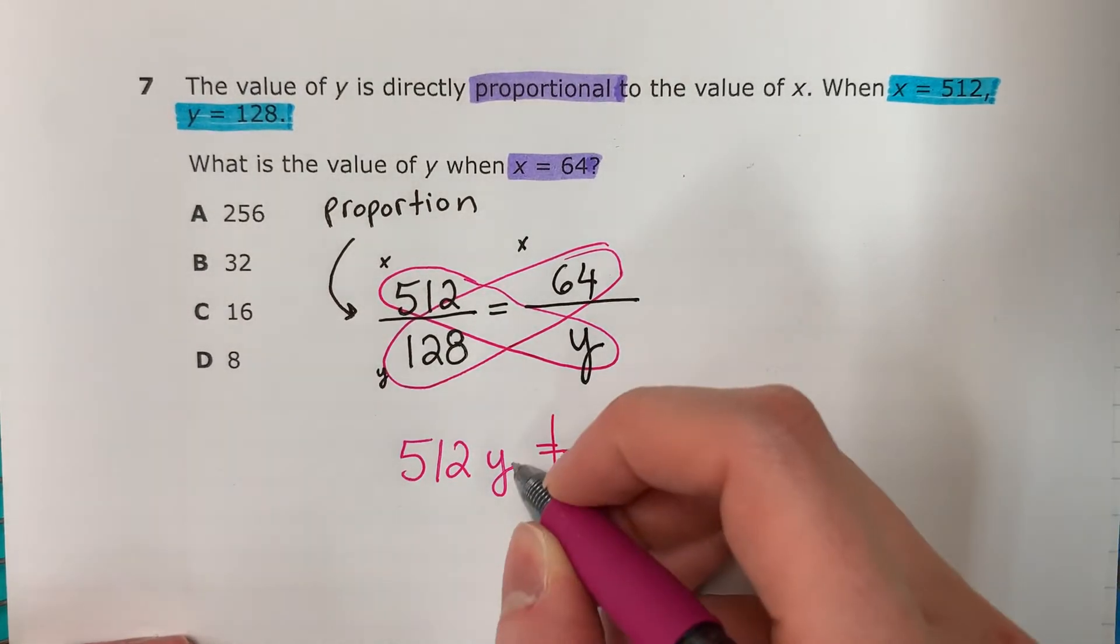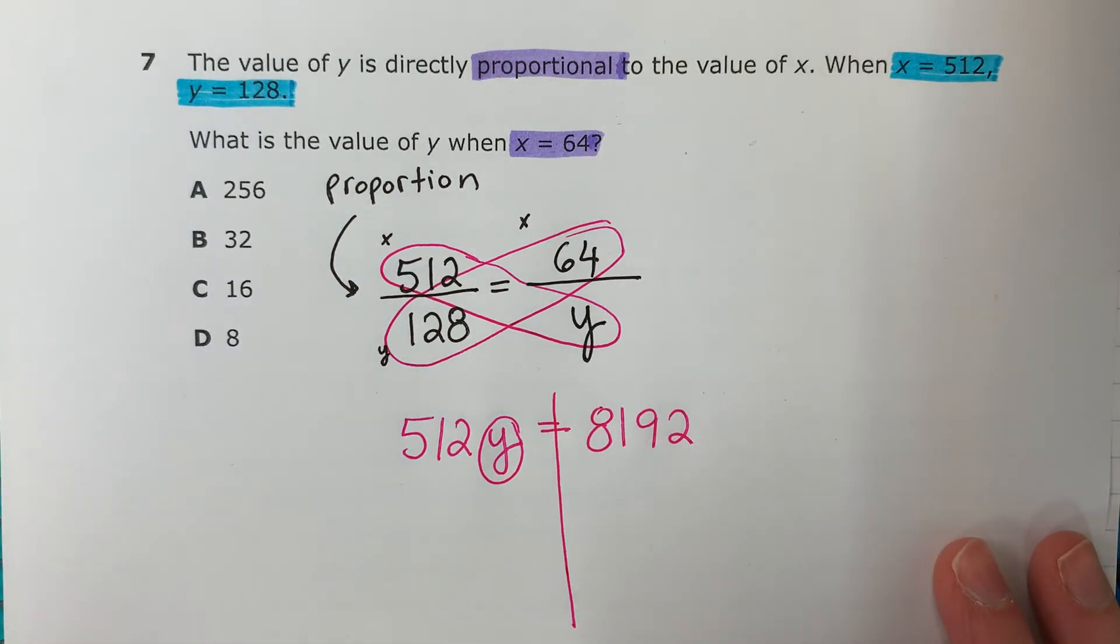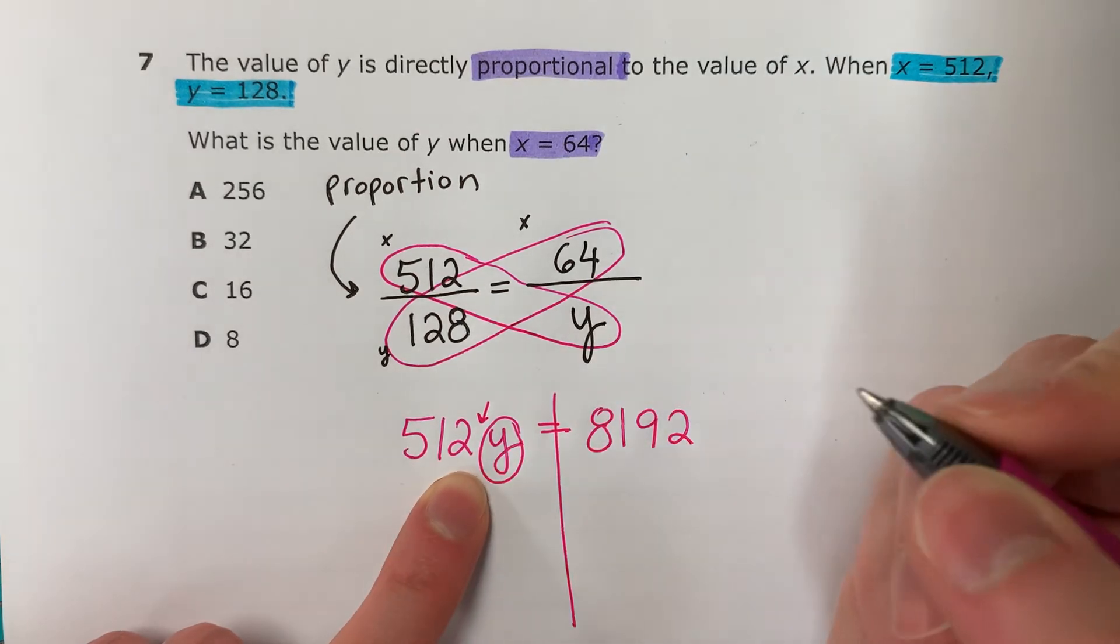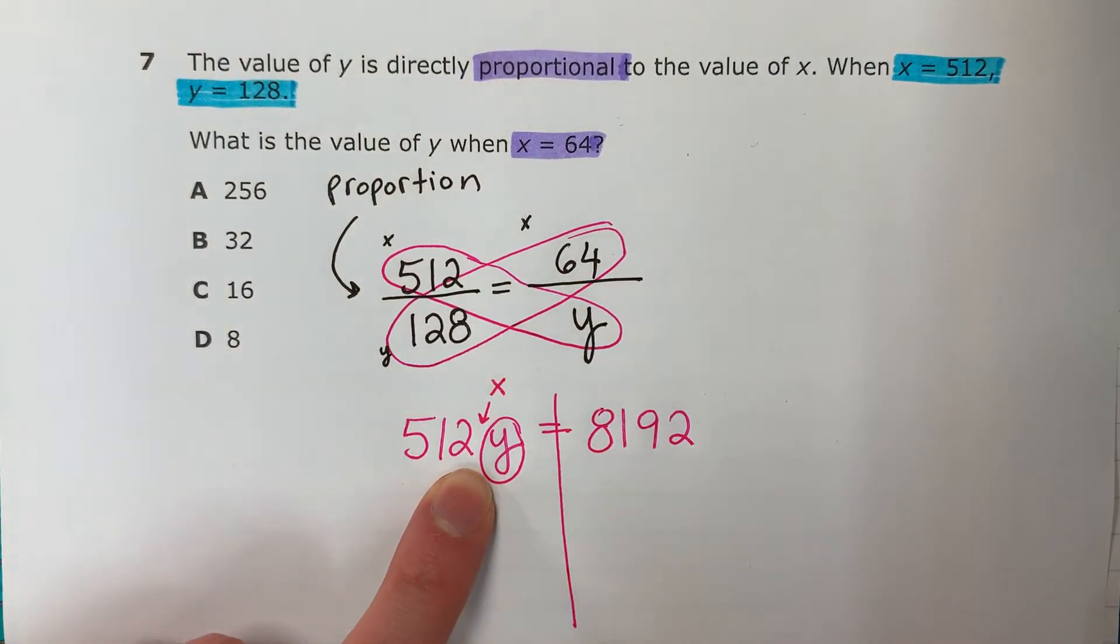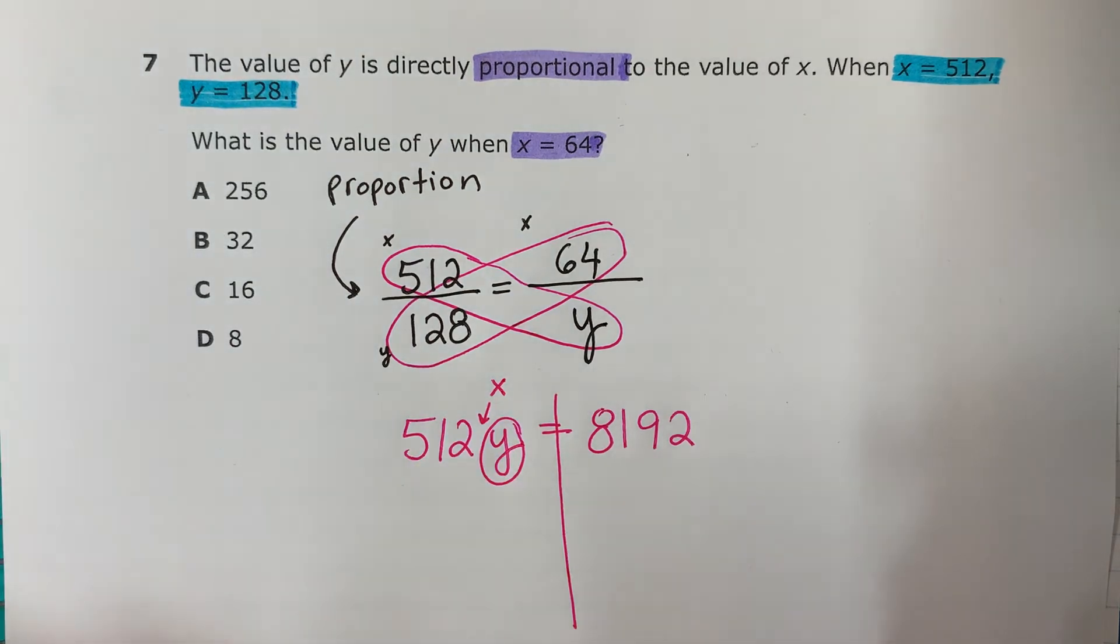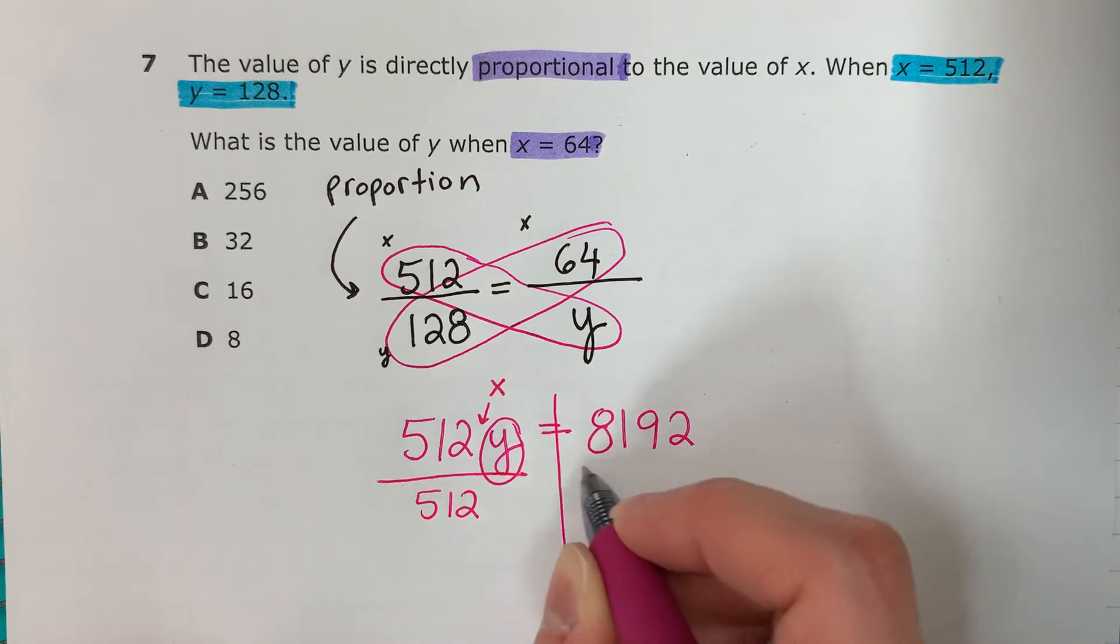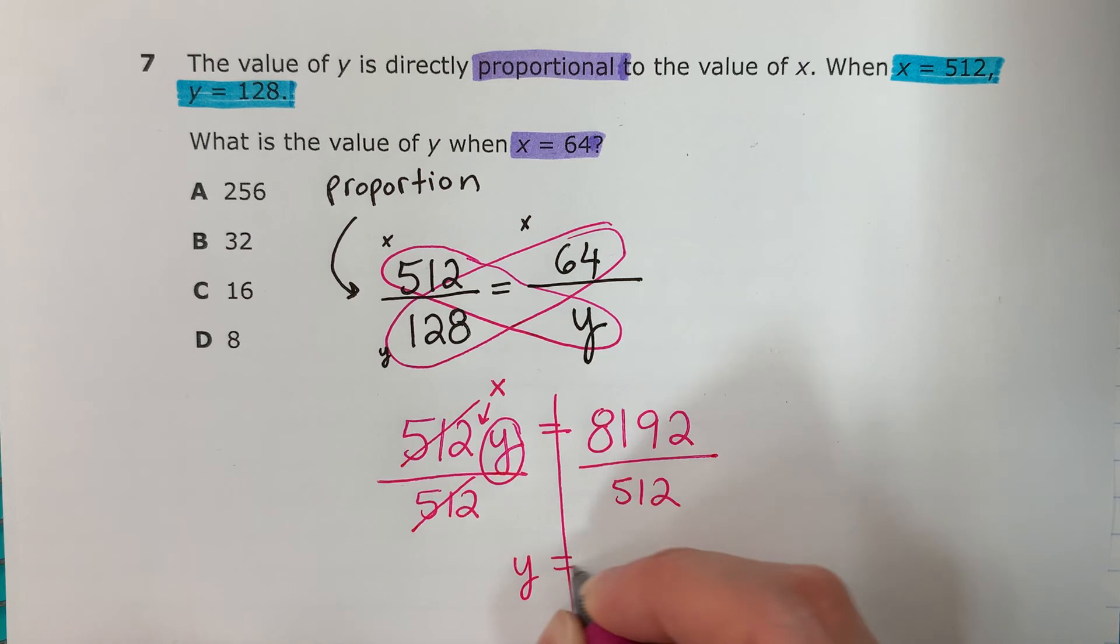Put your line. I want the Y alone. Quiero la Y sola. But it's not alone. No está sola. It has a number. Tiene un número. If there's no sign in the middle, it's multiplied. Si no hay señal en el medio, es multiplicación. The opposite of multiply is divide. El opuesto de multiplicación es división. So divided by 512. Copy. Divided by 512. This cancels. Copy Y equals.